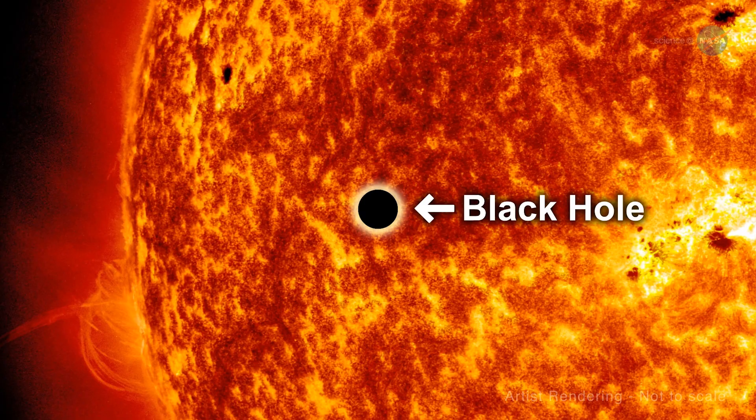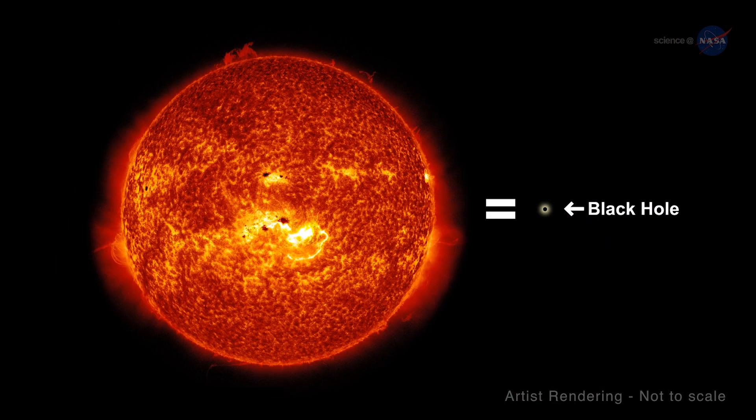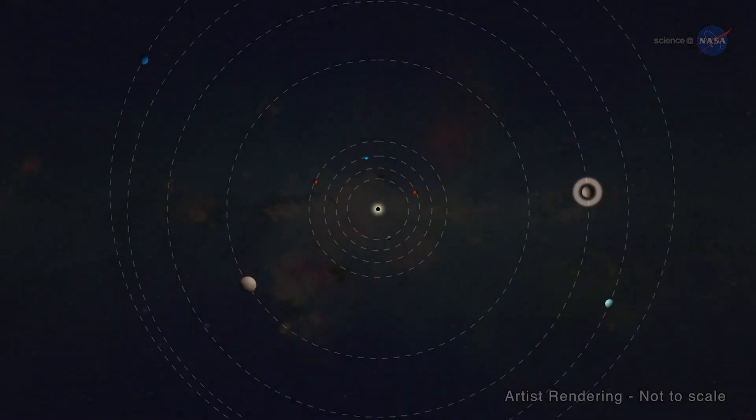So if the Sun would now turn into a black hole, the Earth would continue circling it. We wouldn't be sucked into the black hole, but we would continue circling it. Of course, it would become awfully cold in here.